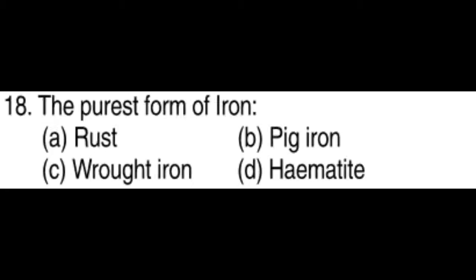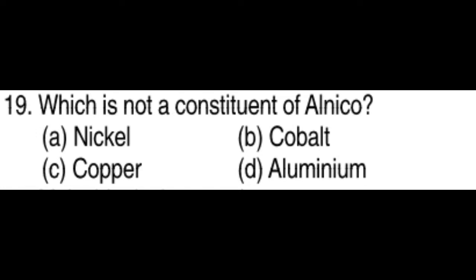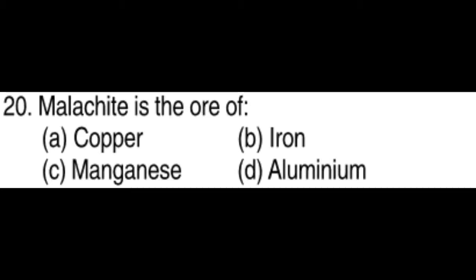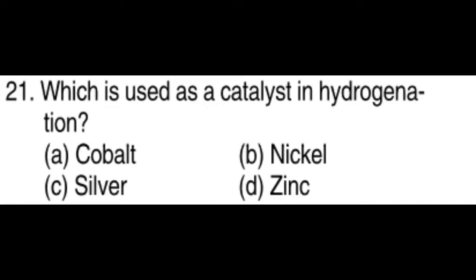Iron. The purest form of iron: Wrought iron. Which is not a constituent of alnico: Copper. Malachite is the ore of Copper. Which is used as catalyst in hydrogenation: